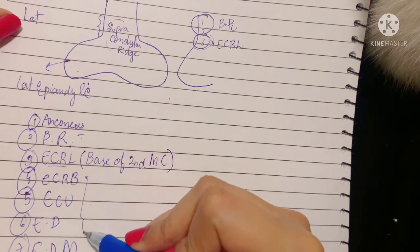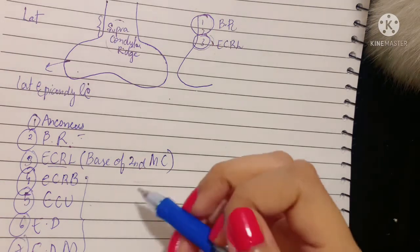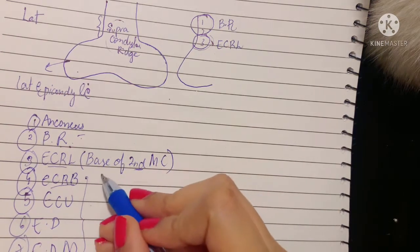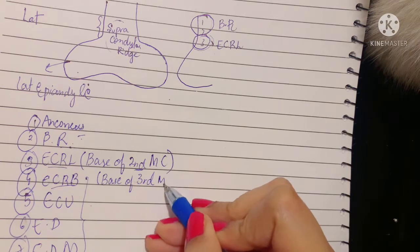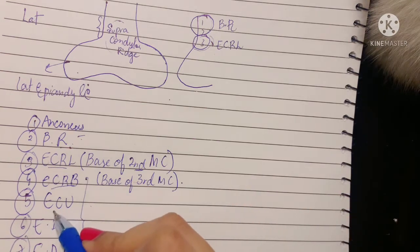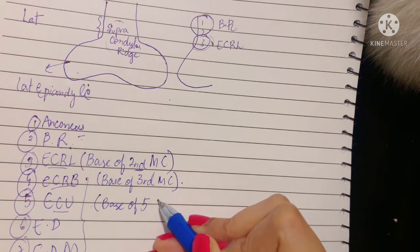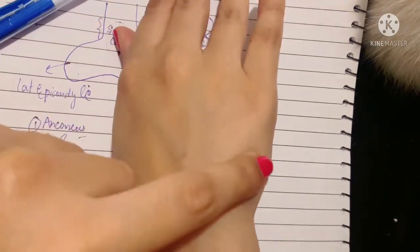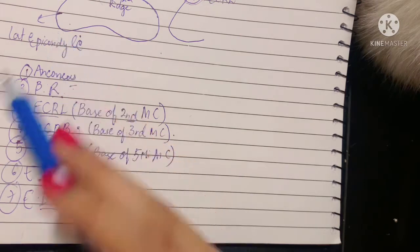All the remaining muscles originate from the common extensor origin — the lateral epicondyle of the humerus. The extensor carpi radialis brevis, being close to the longus which inserts at the second metacarpal, is inserted into the base of the third metacarpal bone. The extensor carpi ulnaris is inserted into the base of the fifth metacarpal bone — the most medial one. The extensor digitorum and extensor digiti minimi also originate from the lateral epicondyle.